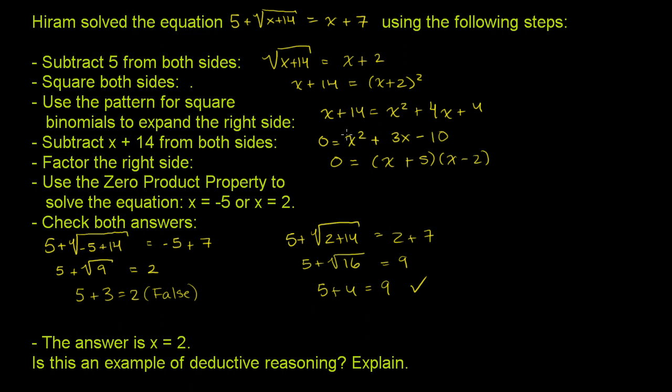Then he subtracted x plus 14 from both sides. So he gets a 0 on the left-hand side. When you take x from 4x, you get 3x. When you take 14 from 4, you get negative 10. So that all makes sense.